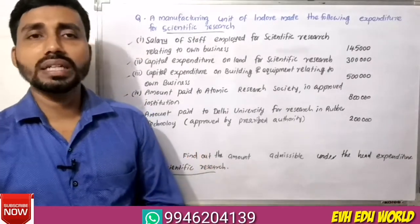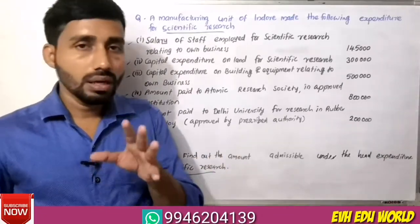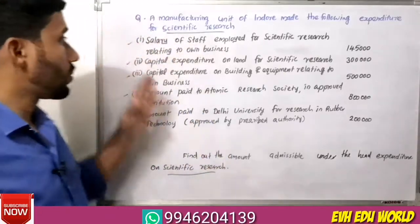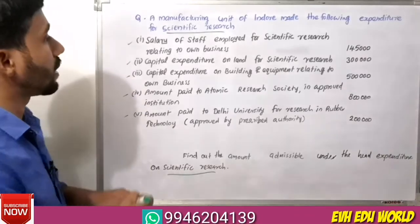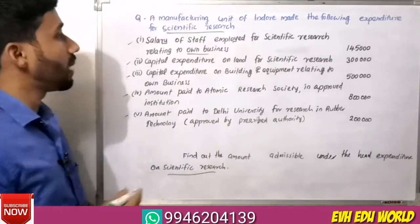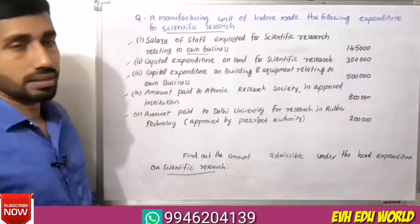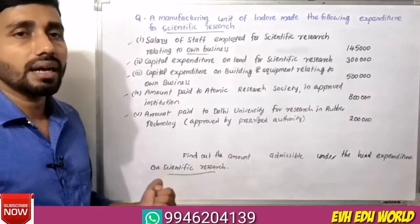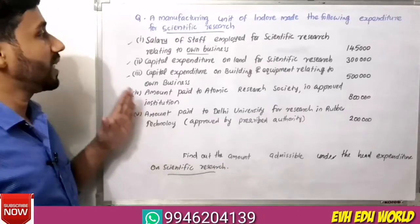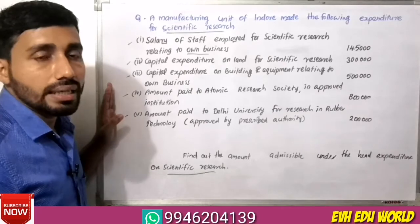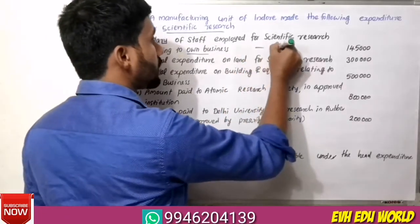We are going to discuss scientific research expenditure and where the deduction applies. The salary of staff employed for scientific research is a revenue expenditure. In scientific research, revenue expenditure related to the business itself qualifies for a 100% deduction.